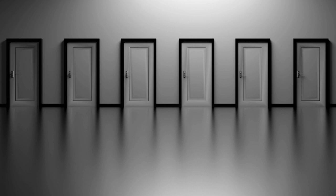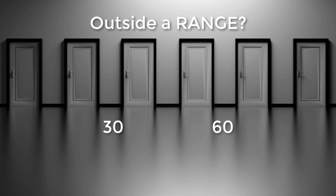Now how do we check for values outside a specific range? Let us take 30 and 60 again. Outside the range of 30 to 60 would mean less than 30 or greater than 60.